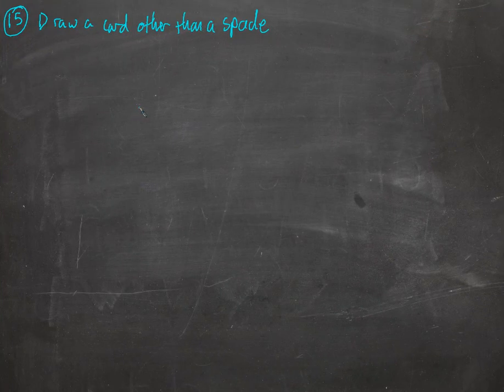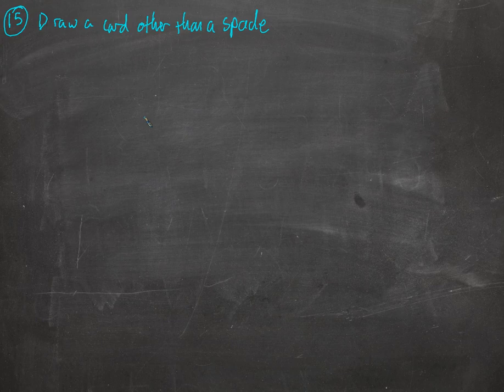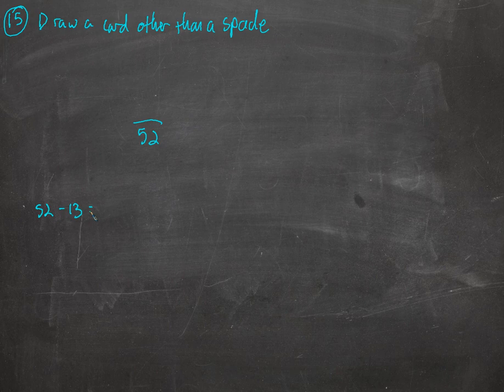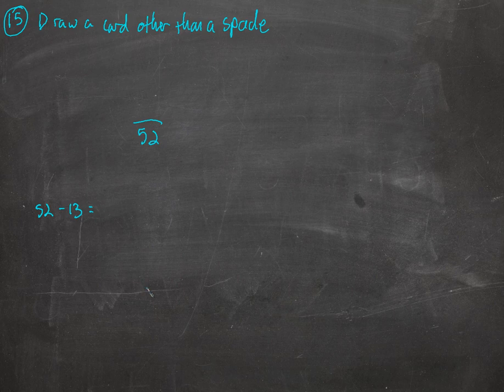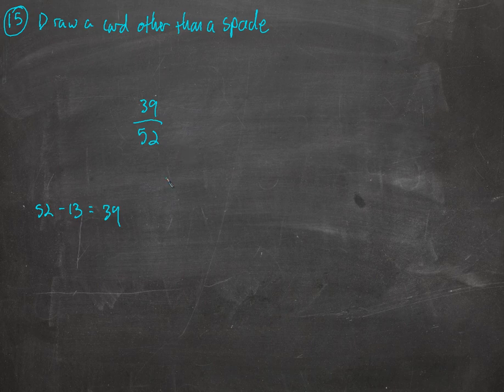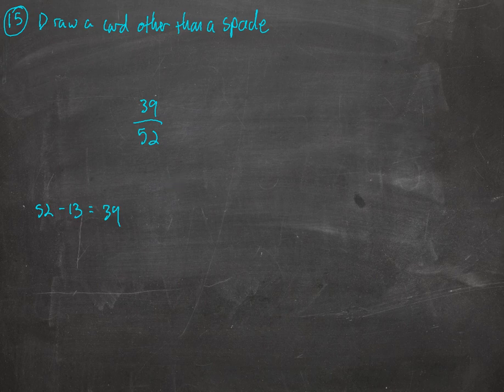Okay, next we're going to draw a card other than a spade. So when we get a card, we want it to not be a spade. Of course, it's still going to be out of 52 because we can draw a card in 52 different ways. How many ways out of those 52 will you draw a not spade? Well, there's 52 cards. There's 13 spades. So how many are there that aren't spades? There's 39 cards that are not spades. So 39 out of 52. These don't share any common factors, so we won't worry about it.